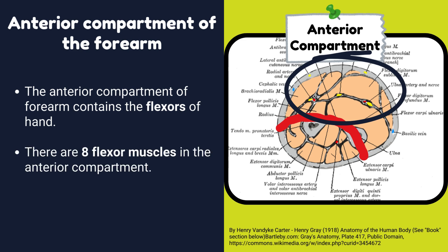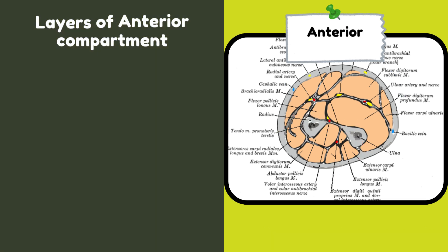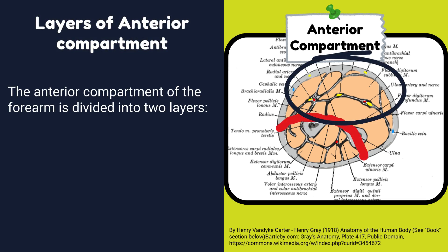There are eight flexor muscles in the anterior compartment. Five flexors are in the superficial layer of the anterior compartment, and three flexors are in the deep layer. The anterior compartment of the forearm is divided into two layers: superficial layer and deep layer.